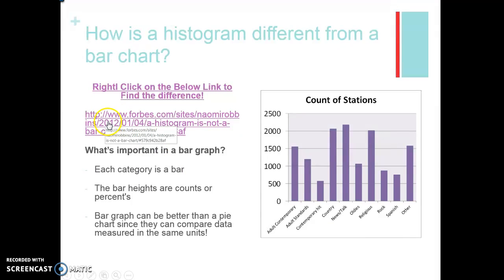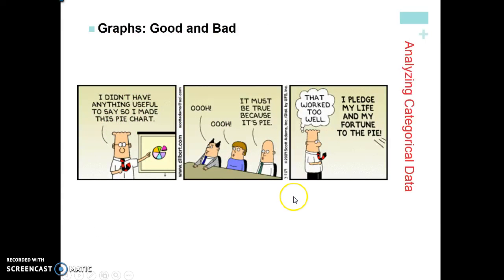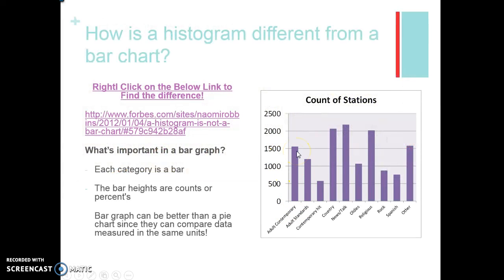There's an important difference between a histogram and a bar chart — we'll look at histograms in the next section, but categorical variables use bar charts. Don't use histograms for categorical variables. In a bar graph, each category or bin is one bar, and the heights of the bars represent either the counts in each bin or the percent each bin takes up of the total. Bar graphs are often better than pie charts because they can compare data measured in the same units and it's visually easy to distinguish categories.